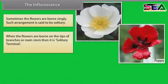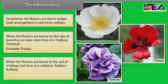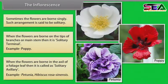When the flowers are borne on the tips of branches or main stem, then it is solitary terminal. Example: poppy. When the flowers are borne in the axil of a foliage leaf, then it is called solitary axillary. Example: petunia, Hibiscus rosa-sinensis.